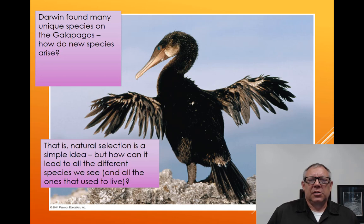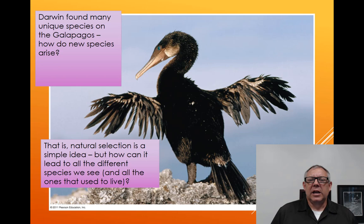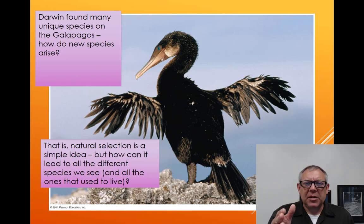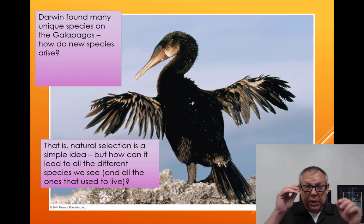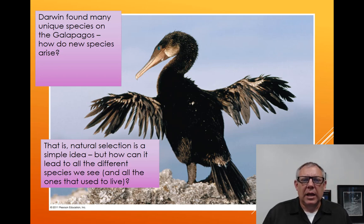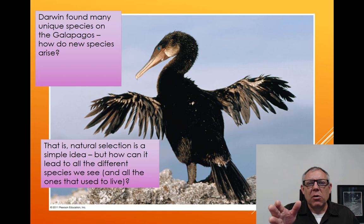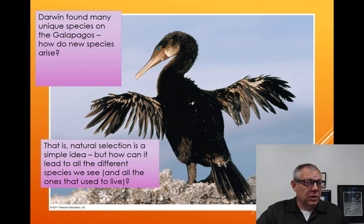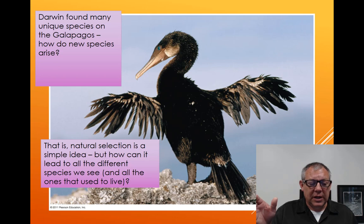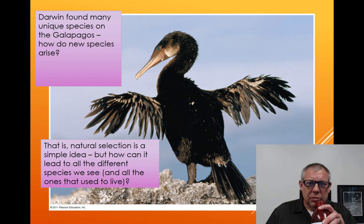This idea started, of course, with Darwin — he realized it was an important idea. He found all these different species on the Galapagos. But how do those new species arise? Natural selection is a pretty simple and straightforward idea. But how can it lead to all the millions and millions of different species we see on Earth, and the millions of species in the fossil record that have already existed?